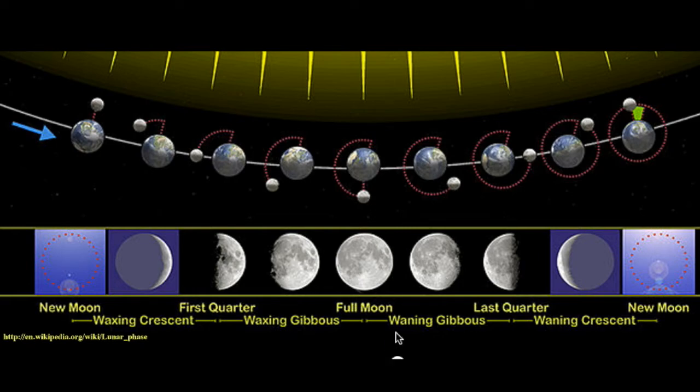And then as the Moon continues around, it becomes less lit, so it's waning gibbous. We see our last quarter and the waning crescent, and then a new Moon again. Notice that during that time, the Earth has gone some ways around its orbit, so the new Moon is going to occur in a slightly different location than the previous new Moon.